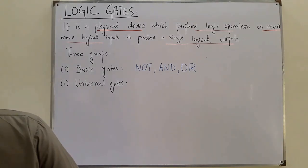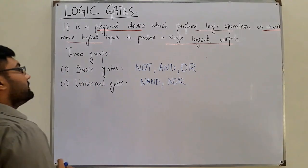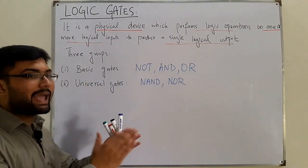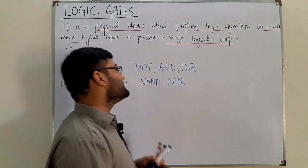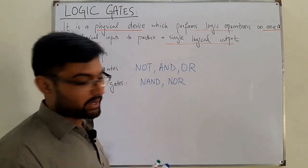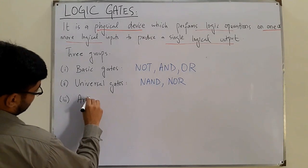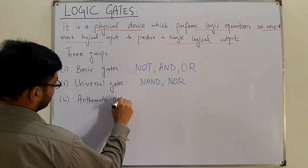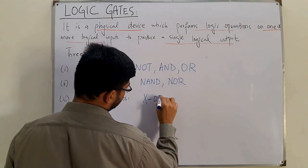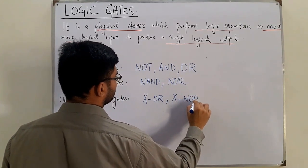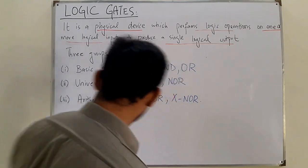There are two gates in the universal gates category: the NAND and the NOR gate. They're called universal gates because we can implement any digital circuitry or digital system using only a NAND or only a NOR gate — it can act as an AND gate, an OR gate, and so on. The third is the arithmetic gates category, which contains the exclusive-OR gate and the exclusive-NOR gate. They are used to perform arithmetic operations.